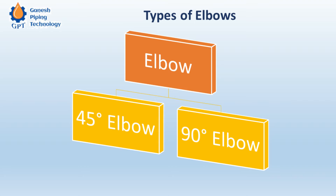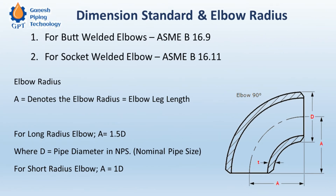Before we begin with the calculation, let's look at different types of elbows used in projects. Elbows are generally 45-degree or 90-degree. Elbows can also be classified by end connection type. If the end connection is butt-welded, the applicable dimension standard is ASME B16.9. If the end connection is socket-welded, the applicable dimension standard is ASME B16.11.